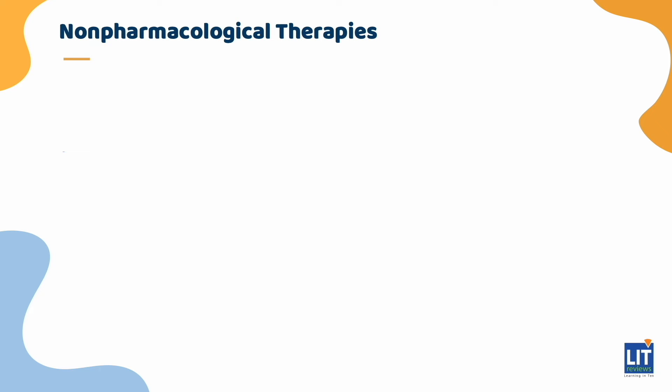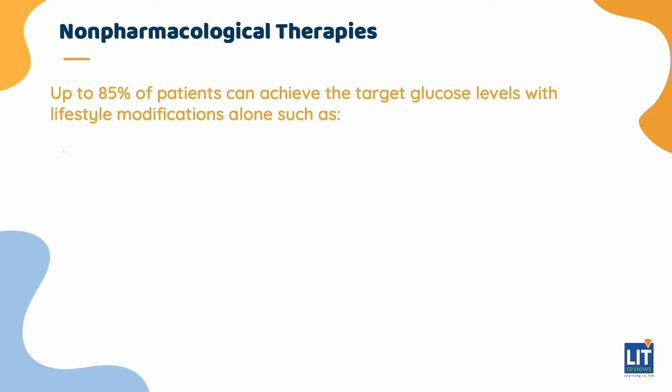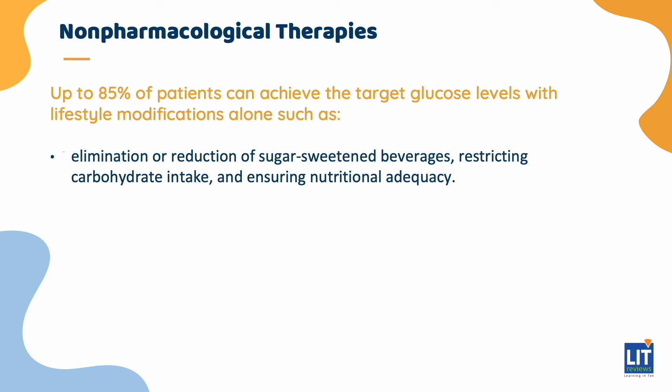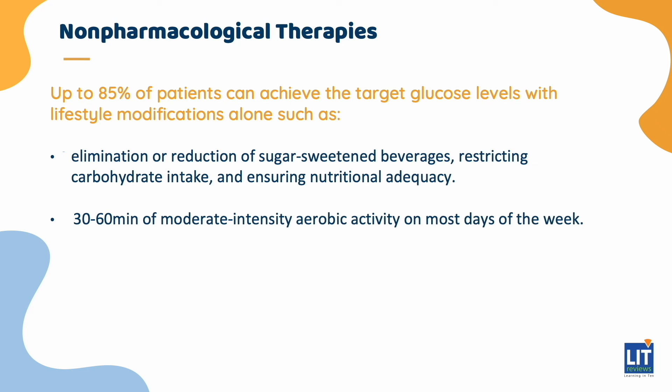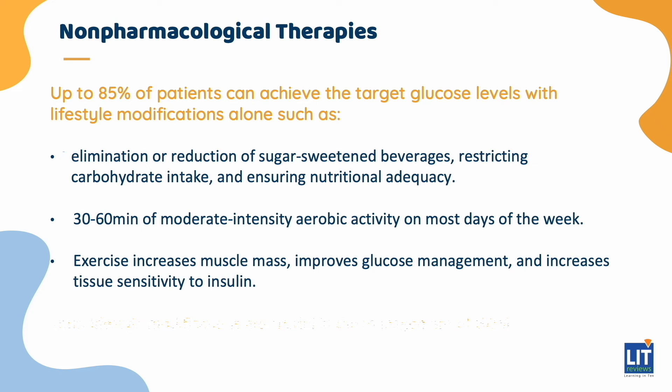The first-line treatment of GDM is non-pharmacological therapies. Up to 85% of patients can achieve target glucose levels with lifestyle modifications alone. This includes a special diet such as elimination or reduction of sugar-sweetened beverages, restricting carbohydrate intake, and ensuring nutritional adequacy. Adults with diabetes are encouraged to perform 30-60 minutes of moderate-intensity aerobic activity on most days of the week, provided there are no medical or obstetric contraindications. Exercise increases muscle mass, improves glucose management, and increases tissue sensitivity to insulin. Thus, lifestyle modifications are crucial in the management of GDM.